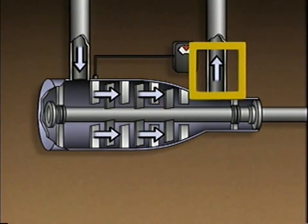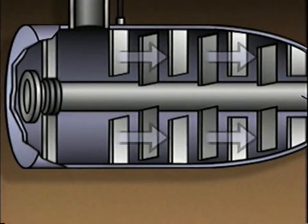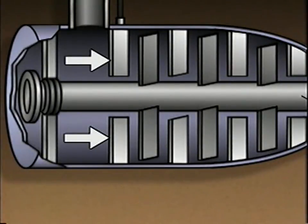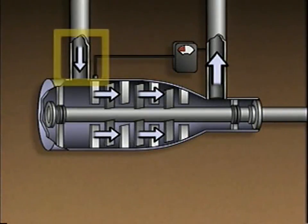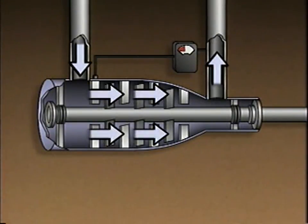When the demand for gas increases, discharge pressure begins to drop. The pressure controller responds to the change in pressure by opening the inlet guide vanes. When more gas enters the compressor, more gas can be compressed. As more gas is compressed, the discharge pressure increases until it returns to its desired value.